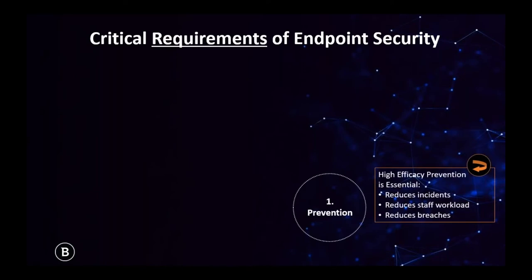There are three core requirements to endpoint security. The first requirement is all about prevention. If your endpoint security product is great, you don't need to worry about malware at all. You want to ensure you're reducing incidents, that staff workload is reduced, and really the end game is to reduce breaches occurring in the environment. That takes really strong endpoint security with a very high level of efficacy and great prevention rates.